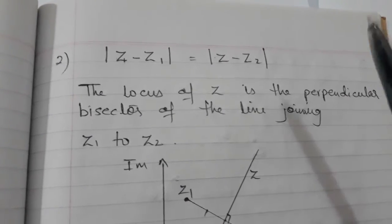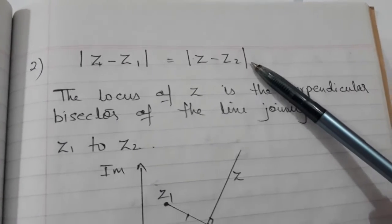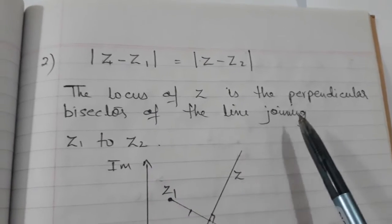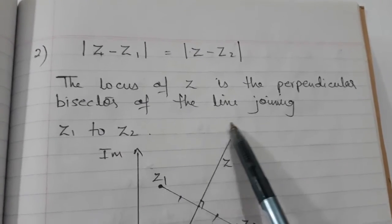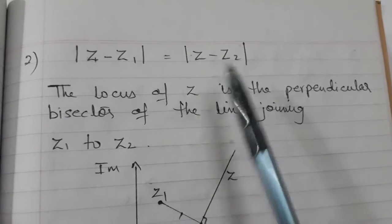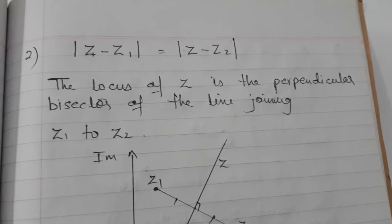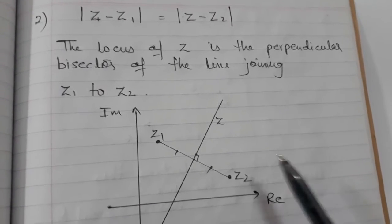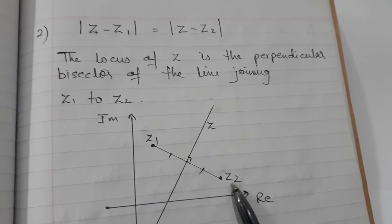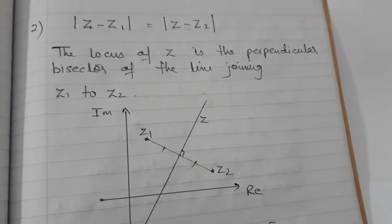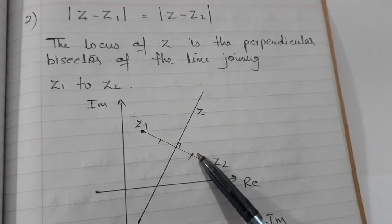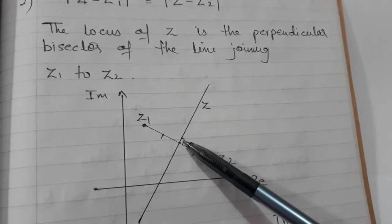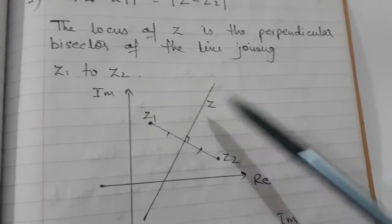Now let's see the second type of loci: |Z minus Z1| = |Z minus Z2|. This means the locus of Z is the perpendicular bisector of the line joining the point Z1 and Z2. This is similar to what we have done in O-level mathematics locus — it is exactly the same thing. You mark the points Z1 and Z2, draw the perpendicular bisector, and mark the equal-distance symbols to indicate they are equal, along with the perpendicular symbol.